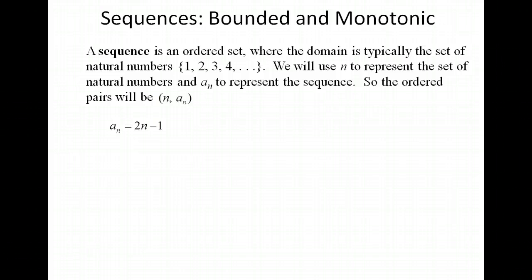Let's start with our definition of a sequence. It's really just an ordered set where the domain is the natural numbers: 1, 2, 3, 4, 5, and so on. Sometimes you can change the domain, but in this lesson we're going to stick to strictly the natural numbers starting at 1 and increasing. Notice that the natural numbers is a set of discrete numbers — there is nothing in between 1 and 2, or between 2 and 3.